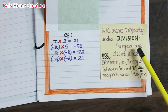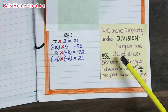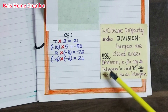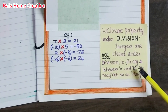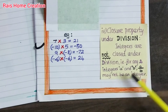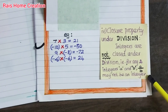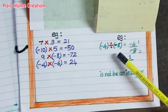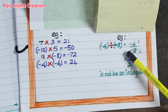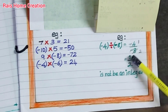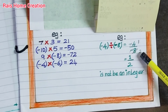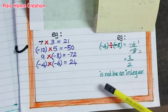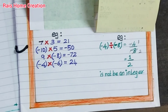Integers are not closed under division. That is, for any two integers A and B, A divided by B may not be an integer. For example: minus 4 divided by minus 8 equals minus 4 by minus 8, which simplifies to 1 by 2. One-half is not an integer.